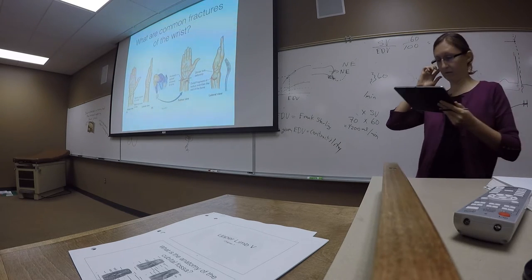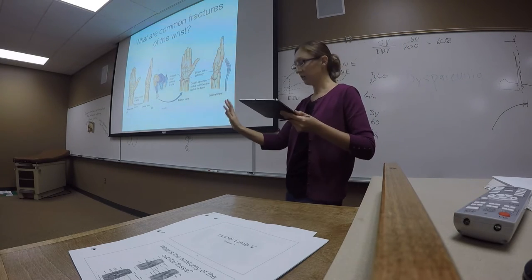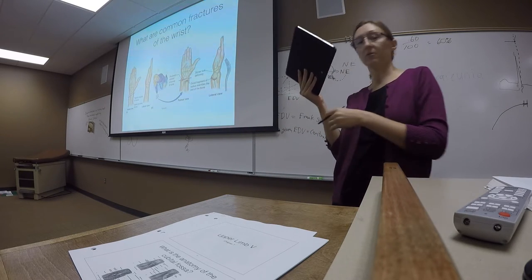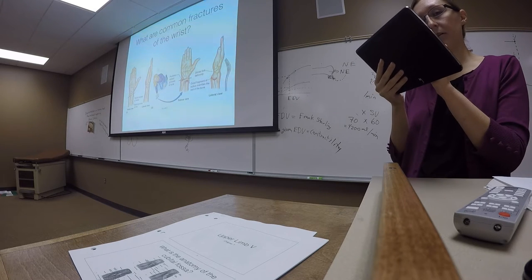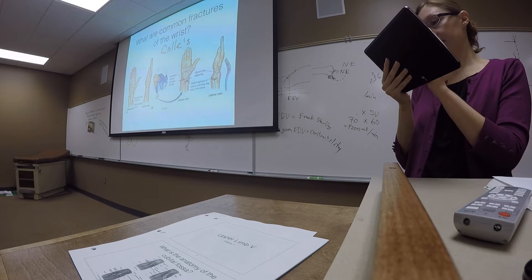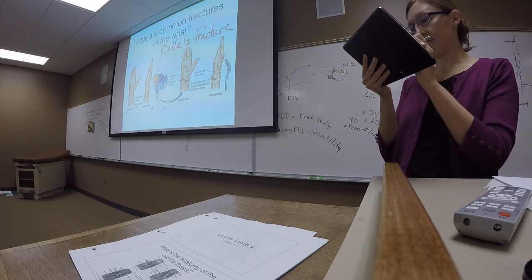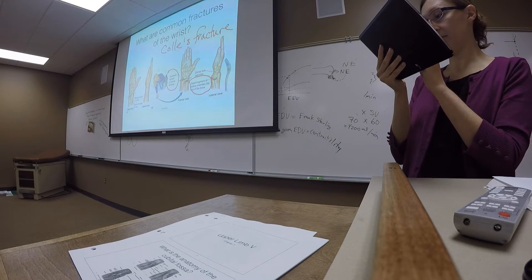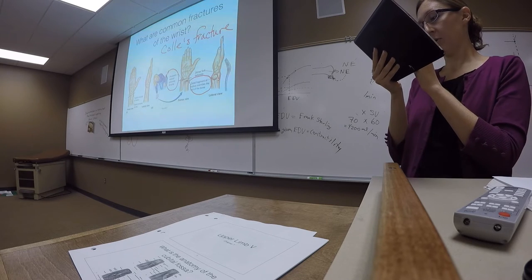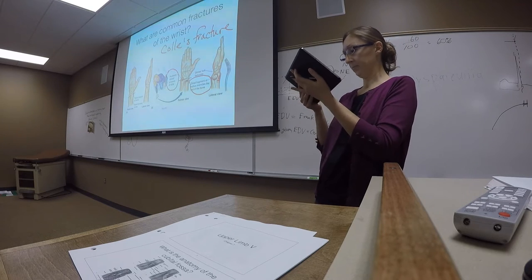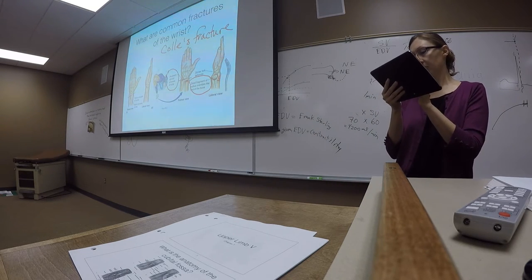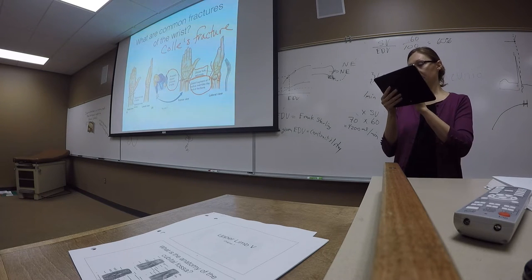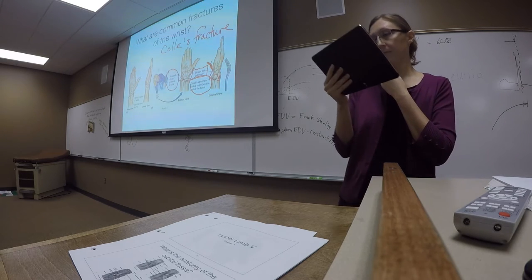Common wrist fractures are often from falling on an outstretched arm. A lot of what happens is fractures of both the radius and the ulna. This type of fracture has a particular name: the Colles fracture. We have the styloid process of the ulna breaking off, as well as a fracture of the radius that allows the distal portion of the radius to move posteriorly and proximally. This gives rise to what they call the dinner fork deformity — you see a kind of divot in the wrist that looks like a dinner fork.